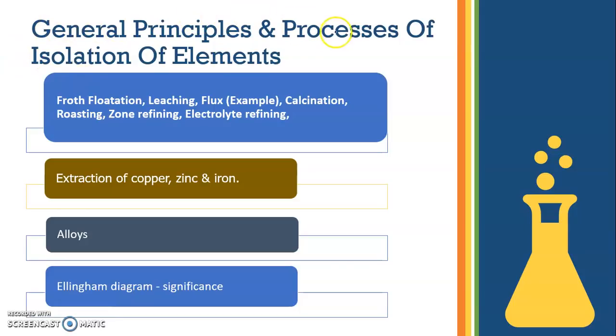From the first chapter - general principles and processes of isolation of elements - do froth flotation, leaching, flux, example, calcination, roasting, zone refining, electrolytic refining. Do all these definitions. Then extraction of copper, zinc, iron - everything under this. Then alloys. Very, very important is Ellingham diagram, the significance of it. Don't skip that.